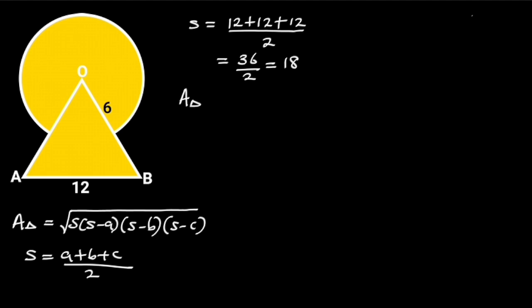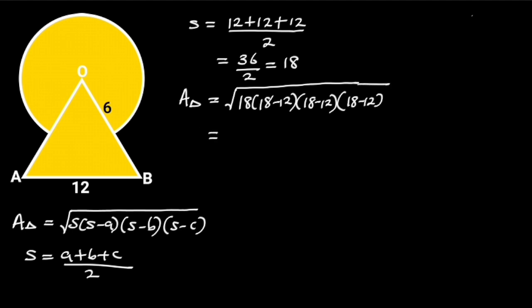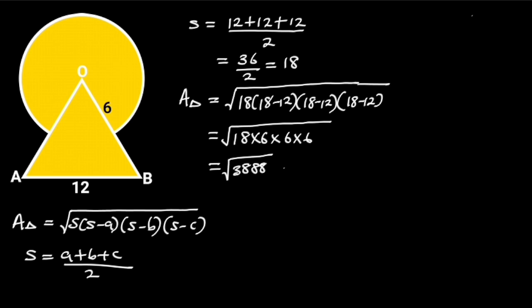The area of triangle OAB will be the square root of 18 times (18 minus 12) times (18 minus 12) times (18 minus 12). Simplifying this gives us 18 times 6 times 6 times 6, which equals 3888. The square root of 3888 is equal to 36 root 3. So the area of triangle OAB is equal to 36√3 square units.